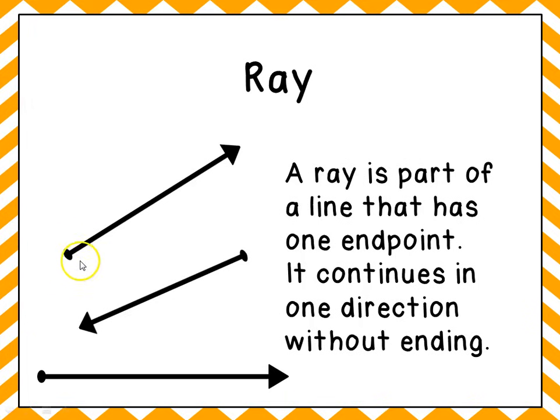And the way we can tell it's a ray is because it has an end point, it has a dot on one end, and an arrow telling us that it's going to continue going in that direction without stopping.